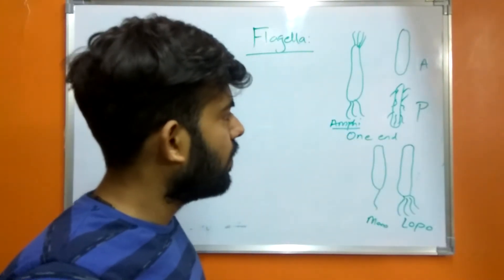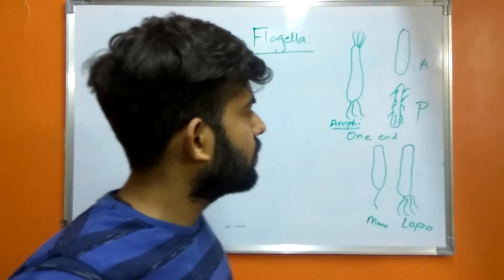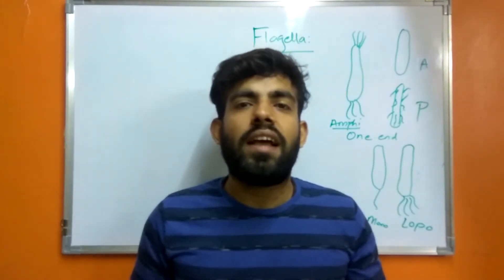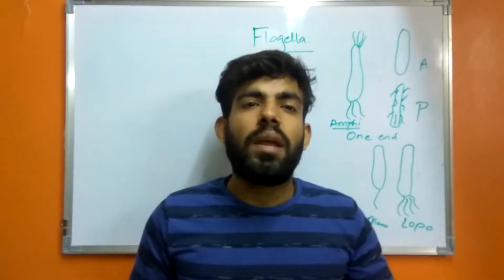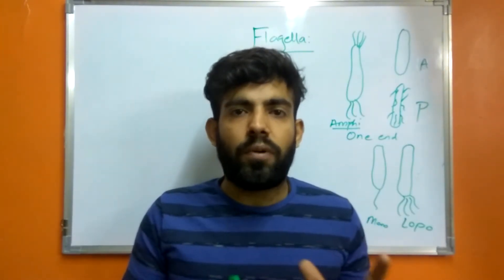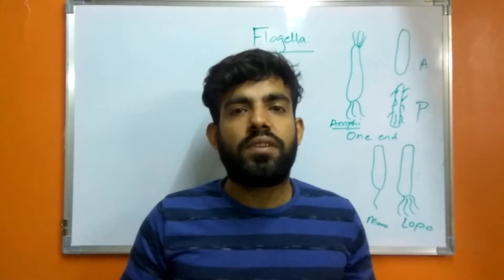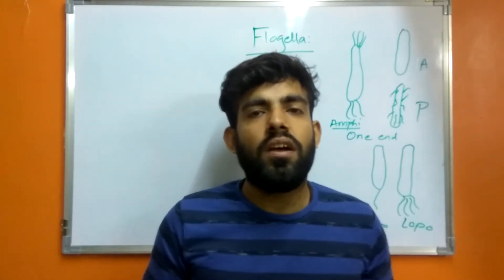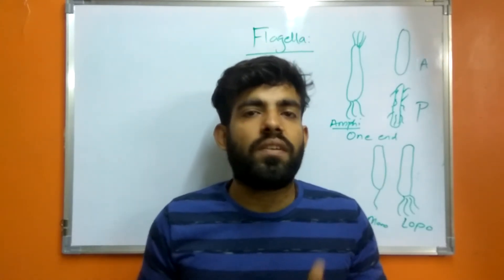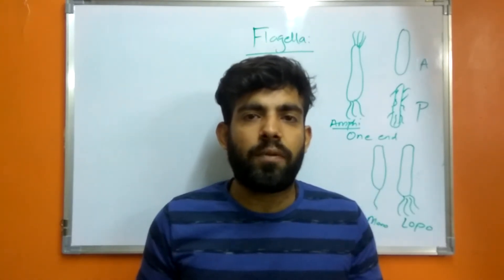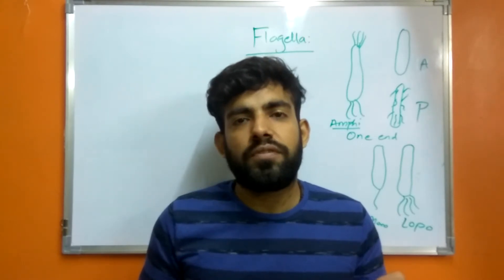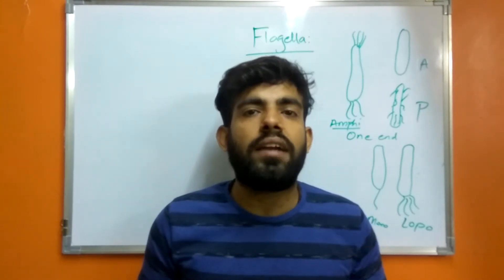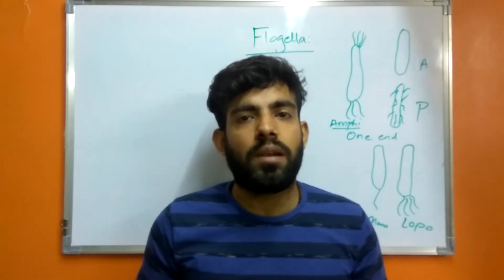Talking about the structure, flagella have three basic types of structures. The first is the filament, the second is the hook, and the third is the basal body.